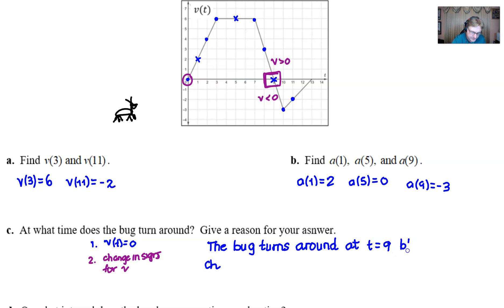The second thing that you look for is a change in signs for your v. If those two things are accomplished, then you have yourself a place where this bug turns around. You've almost given the reason for it; you just have to formalize it. We know that this is going to happen at time t=9. The bug turns around at t=9 because v(t) changes signs, more specifically from positive to negative at t=9. I like this answer; it's a little bit stronger. Locking in on the sign of the v is going to be really important later on.